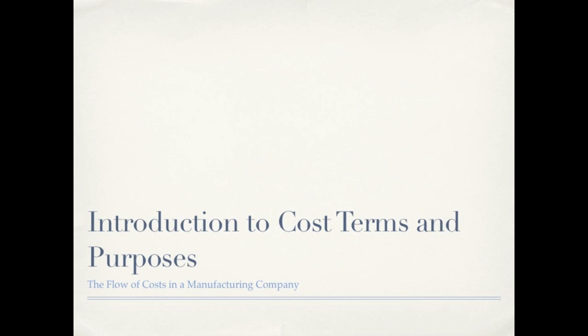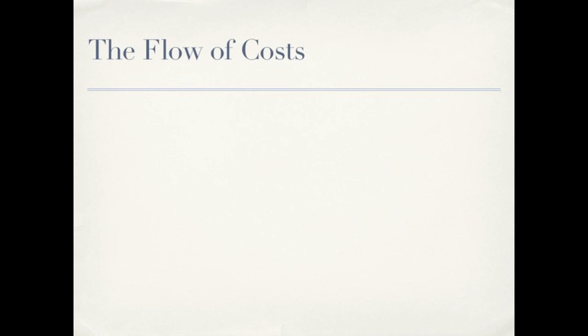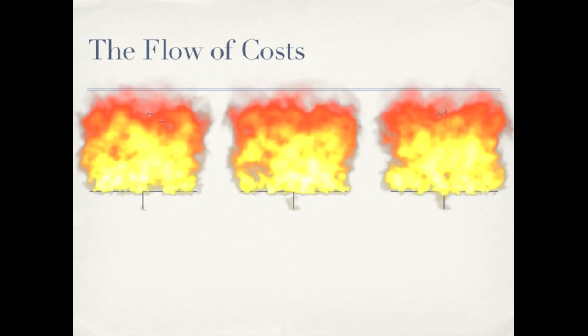This is part two in our series of the introduction to cost terms and purposes. In this part we're going to be talking about the flow of costs in a manufacturing company. Before we can discuss how costs flow through a manufacturing company, we have to be aware that a manufacturing company has more than one inventory account — they actually have three.